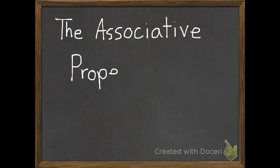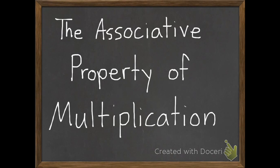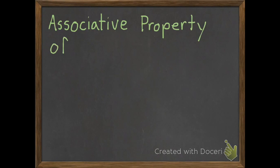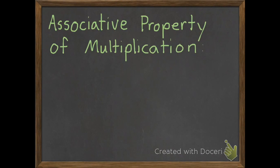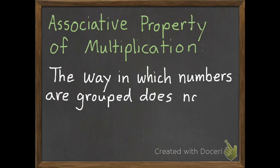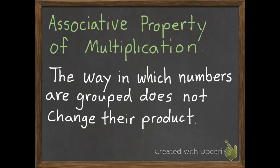Today we will be using the associative property of multiplication. The associative property of multiplication tells us that the way in which numbers are grouped does not change their product.